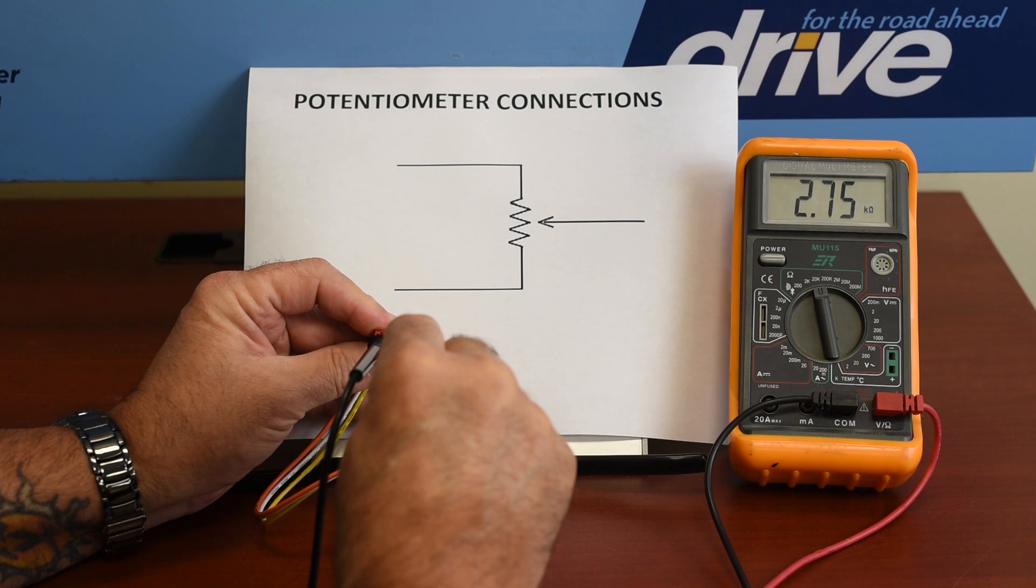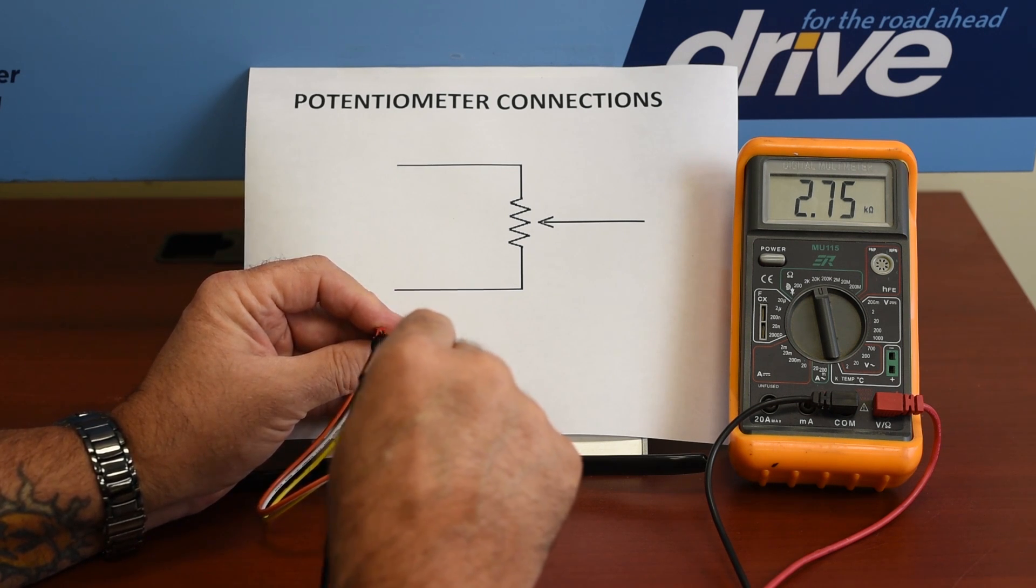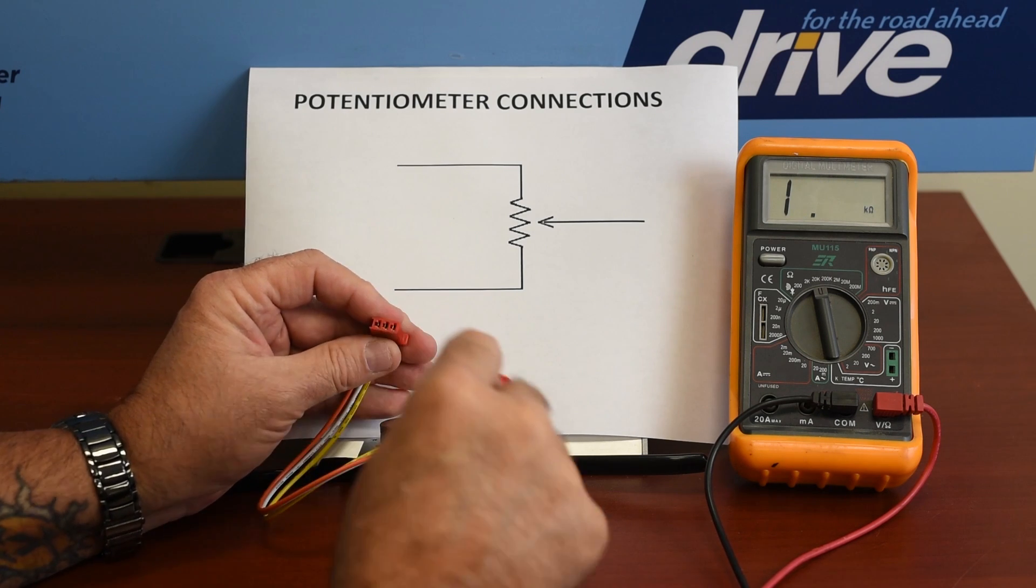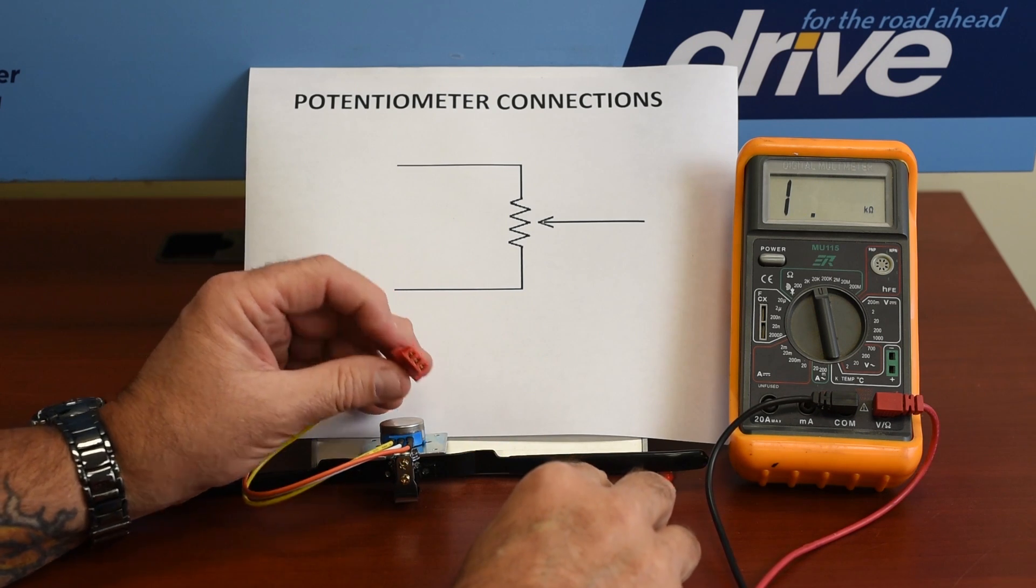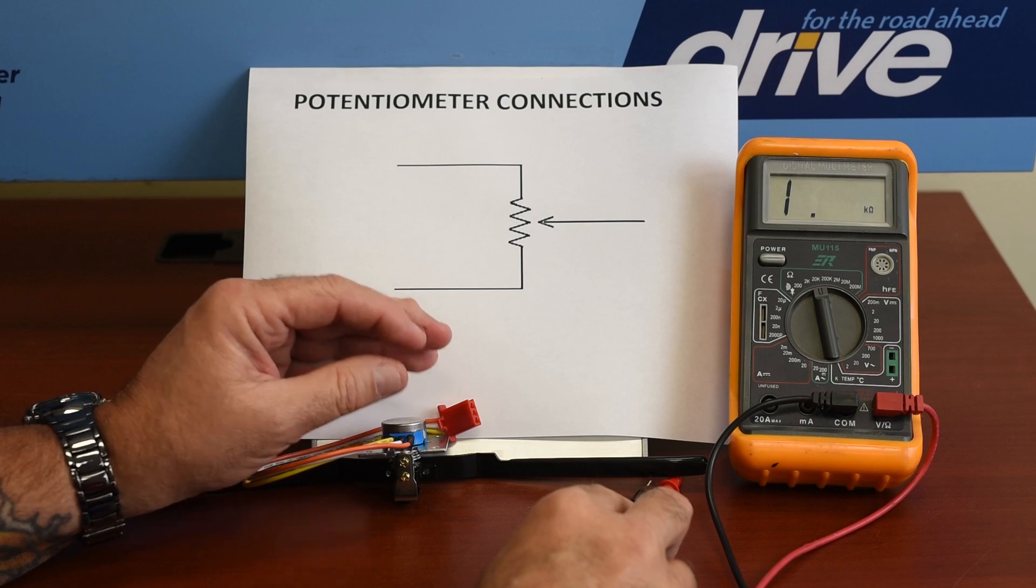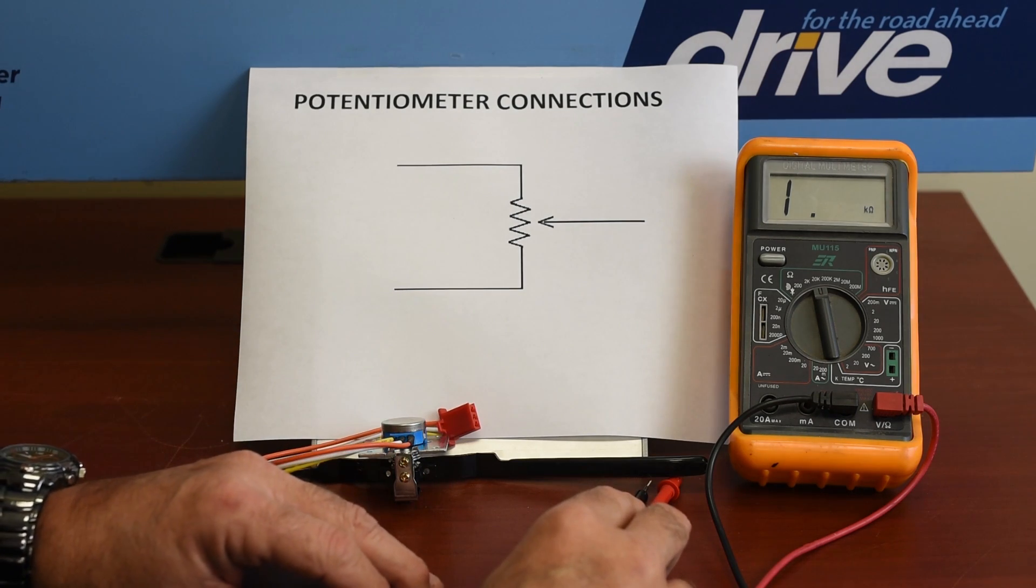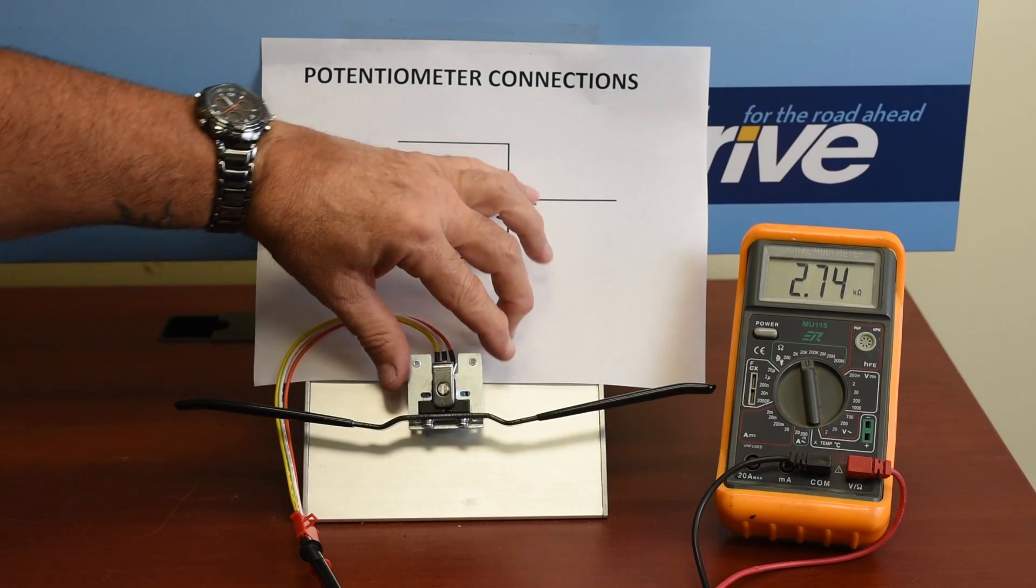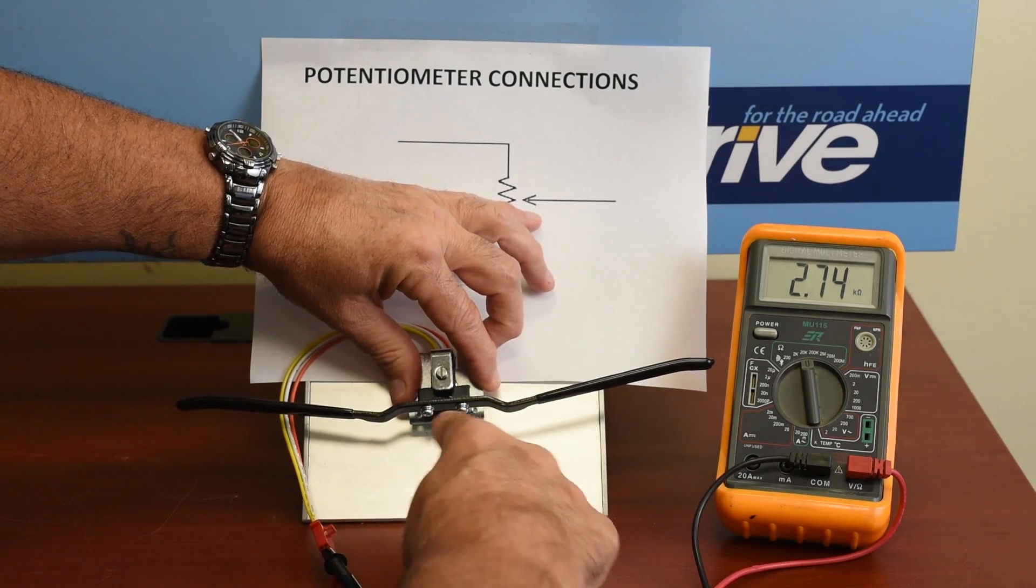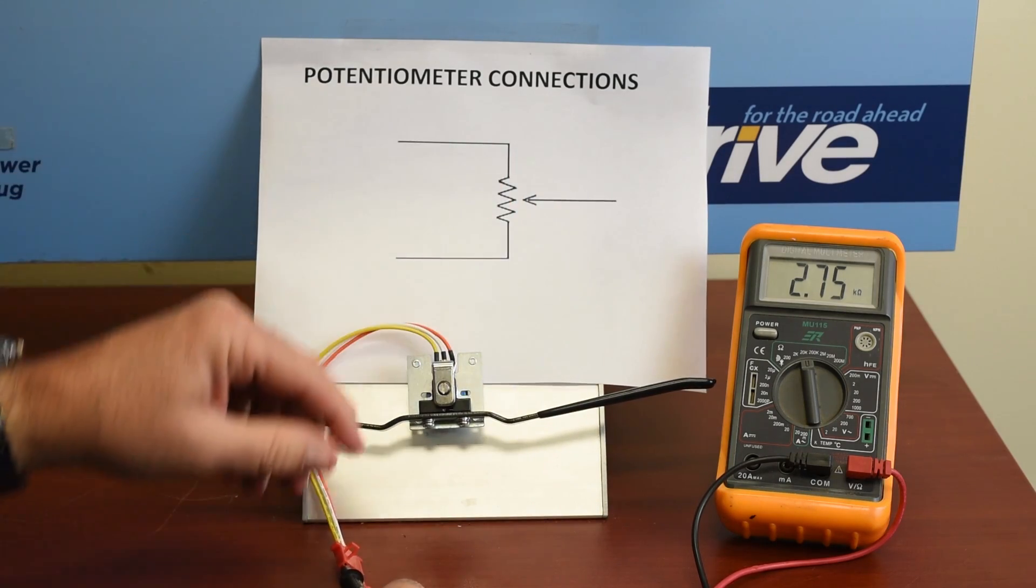So that's within spec of 10%. Next we'll check the swing of the potentiometer to make sure that we don't have any dead spots or shorts. What I've done is just attach this throttle pot to the base with a little Velcro for demonstration purposes.